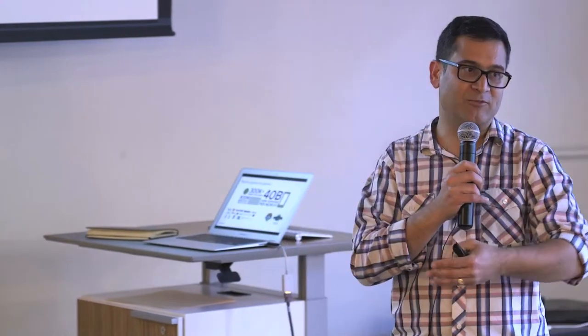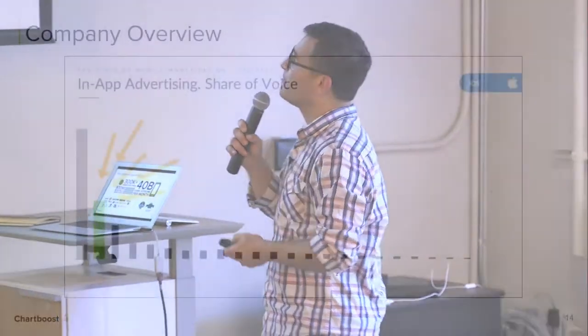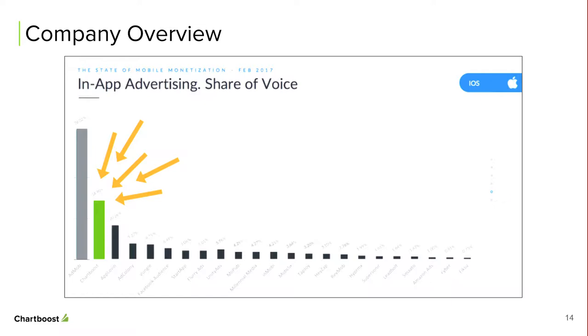Large gaming studios like EA, Zynga, Big Fish, and King all utilize our network to drive user acquisition. Because of this SDK reach, we see 700 million to a billion unique users, which allows us to create rich personas about their gaming behavior — understanding what kind of users like casino apps, trivia apps, or casual action games. We're number two behind Google AdMob in terms of SDK penetration and app developer usage.